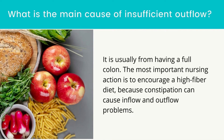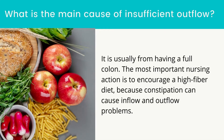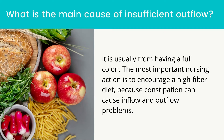Insufficient outflow is usually caused by having a full colon. The most important nursing action is to encourage a high-fiber diet, as constipation can cause inflow and outflow problems; stool softeners may be given if ordered. Insufficient outflow may also be caused by catheter migration out of the peritoneal area, requiring an x-ray to evaluate catheter position. Nursing actions include maintaining the drainage bag below the client's abdomen, checking for kinks in the tubing, turning the client to a side-lying position or ambulating, checking for fibrin clots, and milking the tubing to dislodge clots as prescribed.